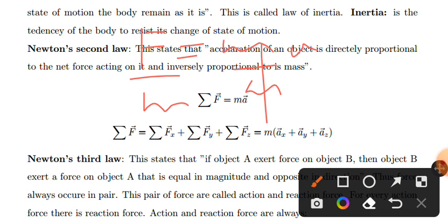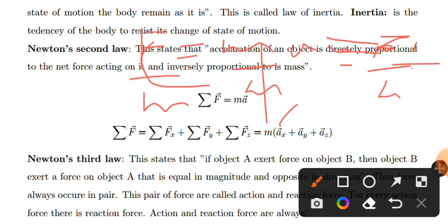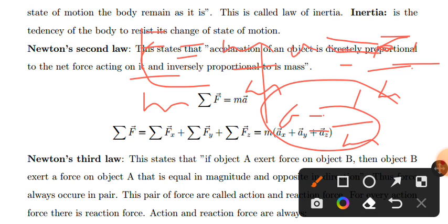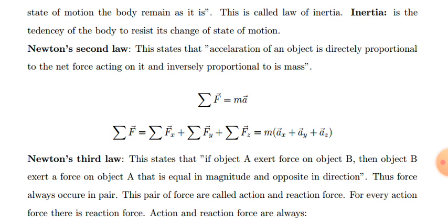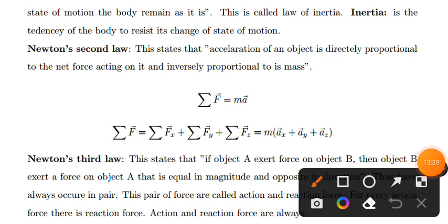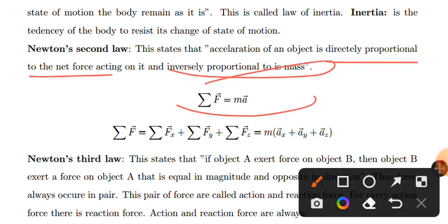Setting up Newton's second law: acceleration is directly proportional to net force, and acceleration is inversely proportional to the mass of the object. So more force means more acceleration, and more mass means less acceleration.